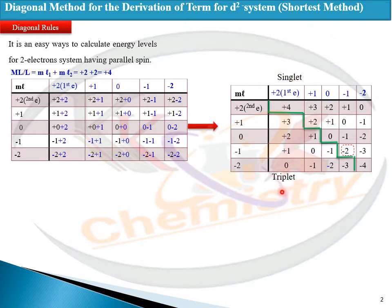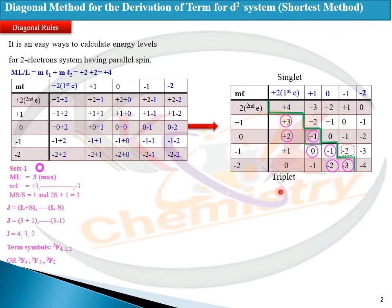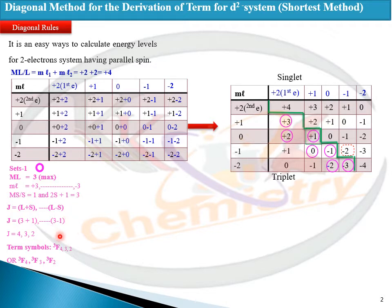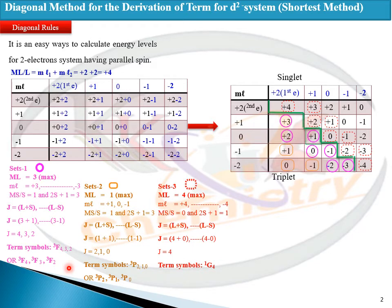Above the diagonal the values will be considered singlet, and below the diagonal the values will be considered as triplet. So here we have a number of sets. Set one: ML is equal to three. If ML is three, the term will be F. The spin multiplicity is triplet, so J values are four, three, two. The term symbol will be ³F₄, ³F₃, ³F₂.